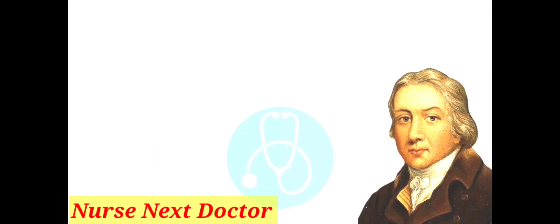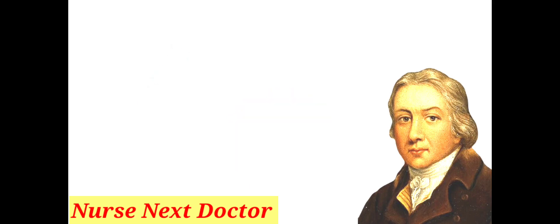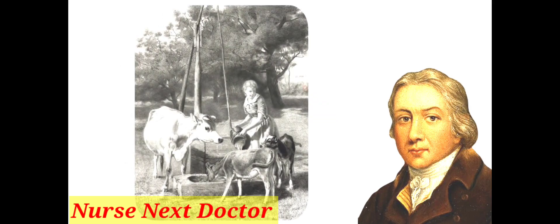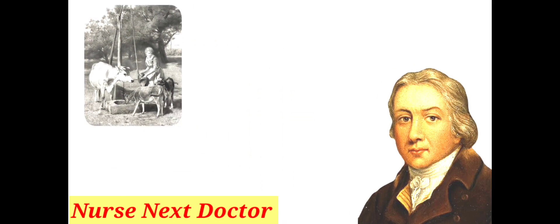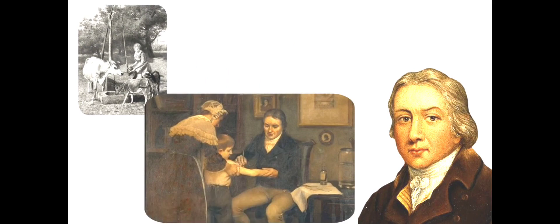Edward Jenner was a doctor who established the procedure of vaccination by introducing the material from a cowpox vesicle on a milkmaid into the arm of a boy. Two months later, he inoculated the boy with smallpox and the disease did not develop.